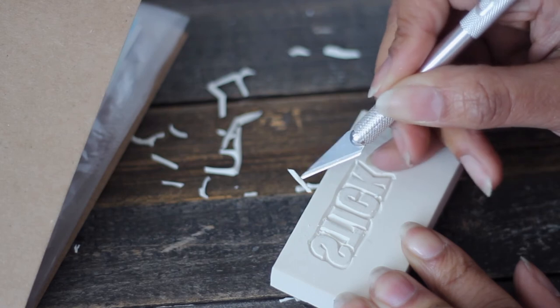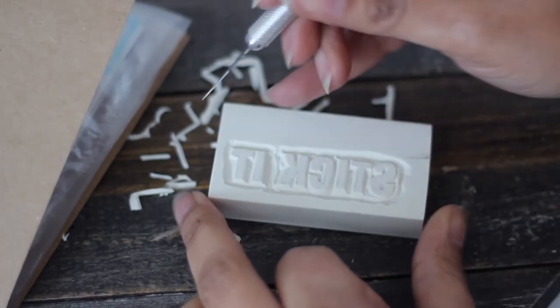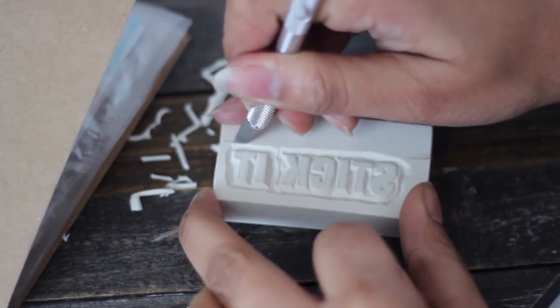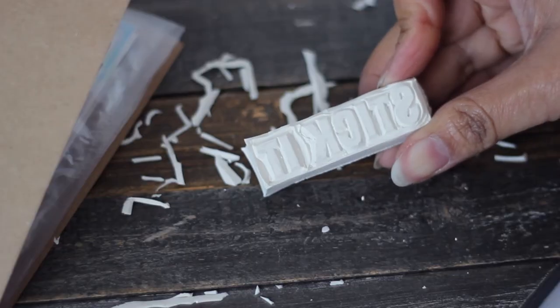Once I reach that point, I like to go around my design one more time so that the negative space is really bold and I can cut away all of the excess eraser. Just remember, don't throw these pieces away because you can use them to make even smaller stamps.